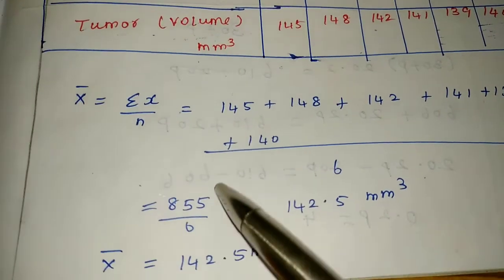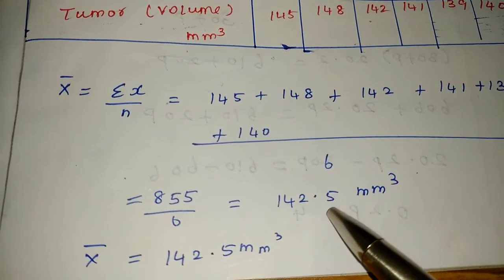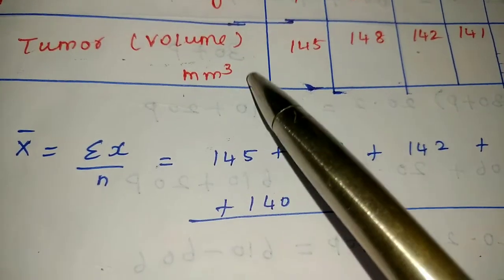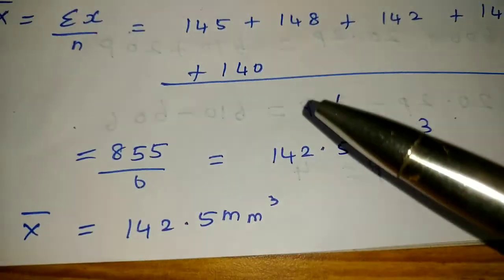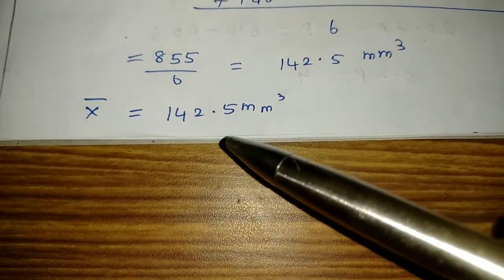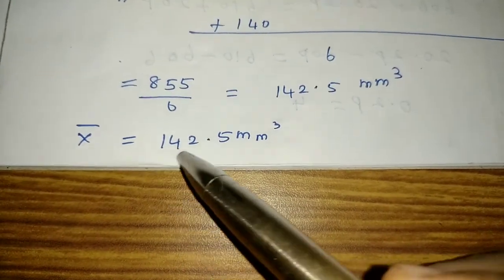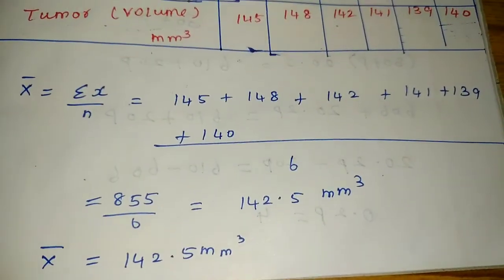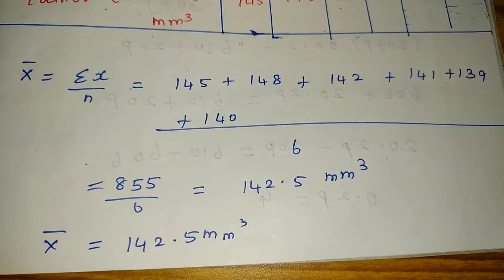So now when I divide, the result is 142.5 mm cube. The volume is in mm cube, so the mean tumor volume is x bar equals 142.5 mm cube. Clear? Thank you.